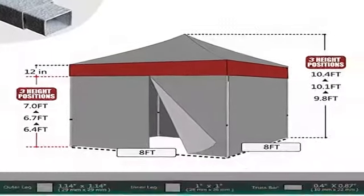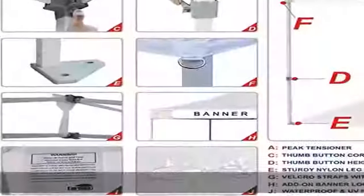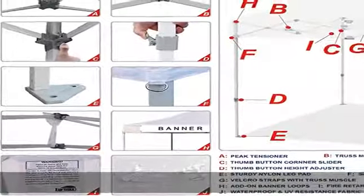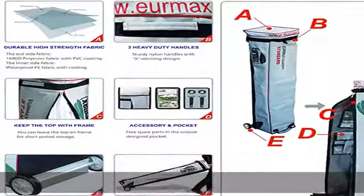Steel D-rings on each corner make it easy to use a rope to secure your canopy. Velcro straps with truss buckle on each valance keep the canopy stuck to the frame, especially on windy days.